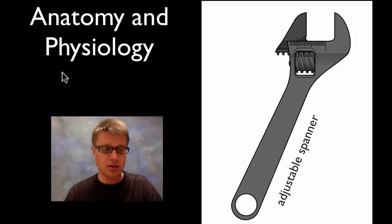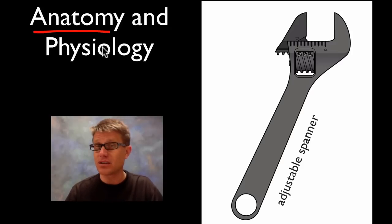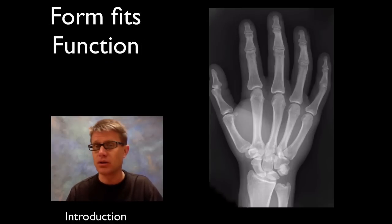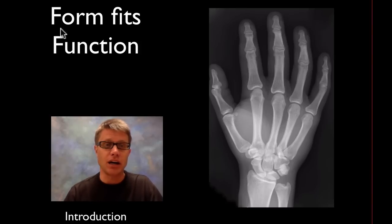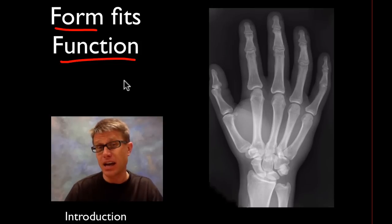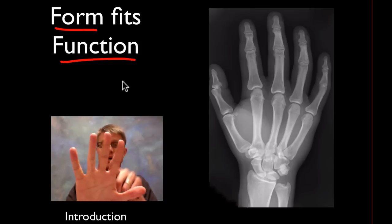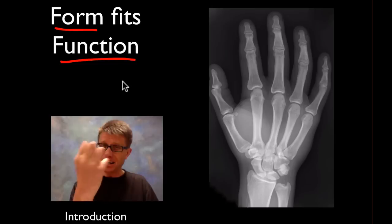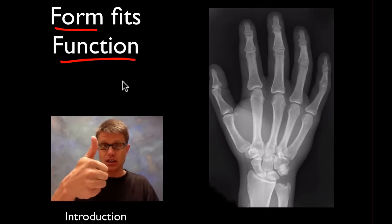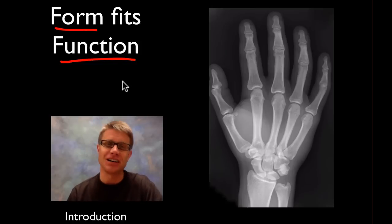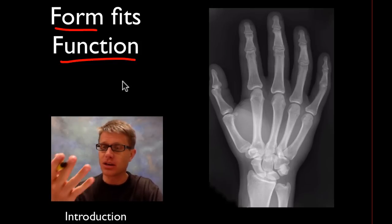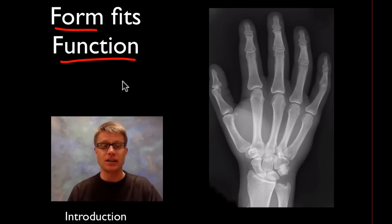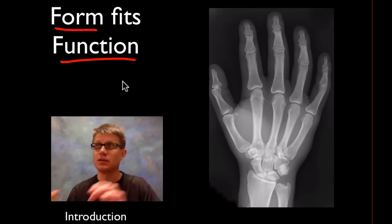Anatomy is simply what it is — what's the structure. Physiology is the function. So let's talk about the human hand. There's a term: form fits function. Think of form as the anatomy — the muscles, the bones, the tendons and all of that is the form. What it does, how it works, how it operates — all of those things are the function of the hand, from the nerves that pick up touch to the muscles. Always be thinking: form fits function, anatomy fits physiology.